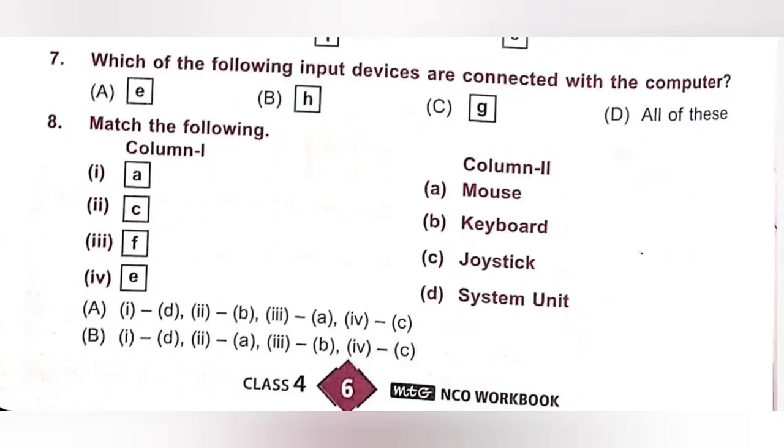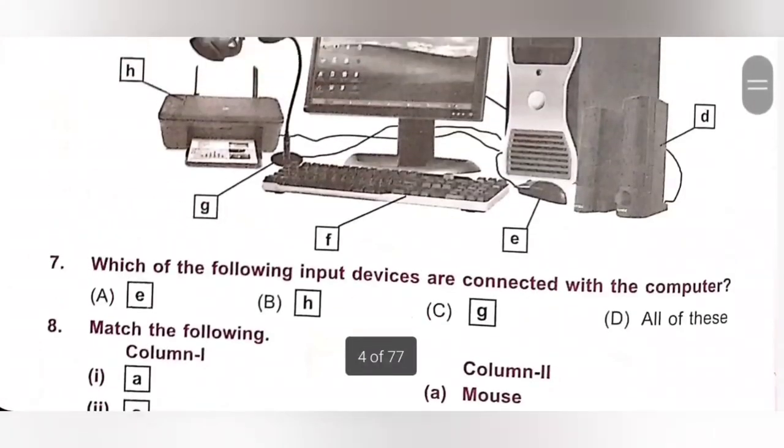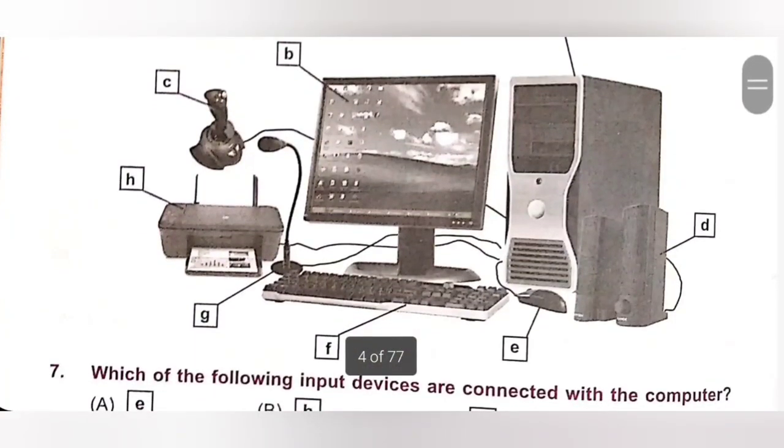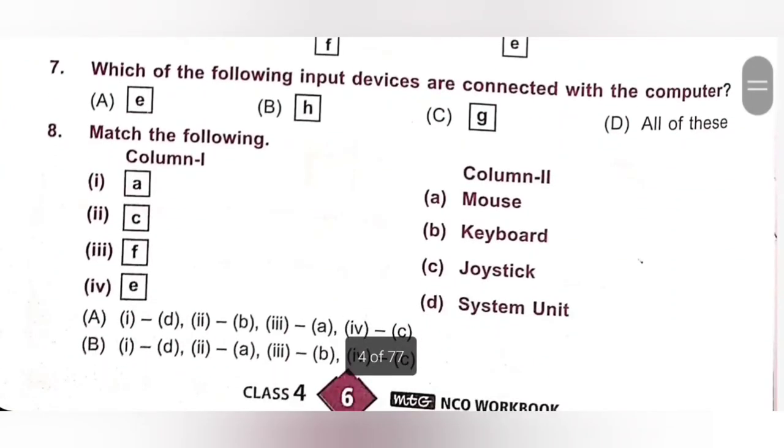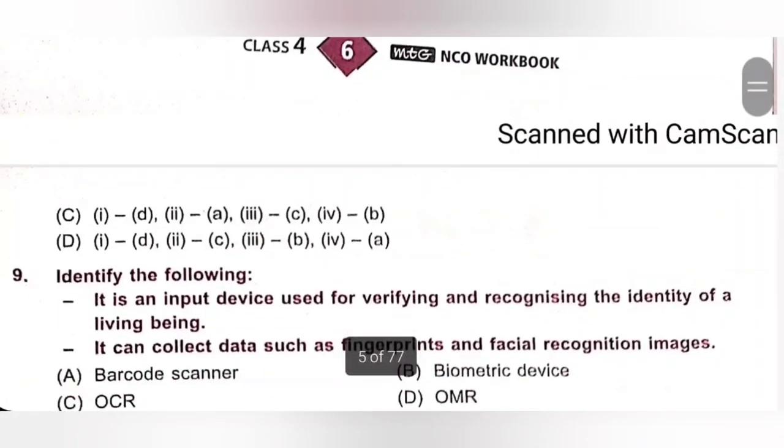Answer the following. Column 1 with column 2. So, A is system unit, C is joystick, F is keyboard, E is mouse. 1, D. 2, joystick C. 3, keyboard B. 4, mouse A. So, option D is the correct answer.